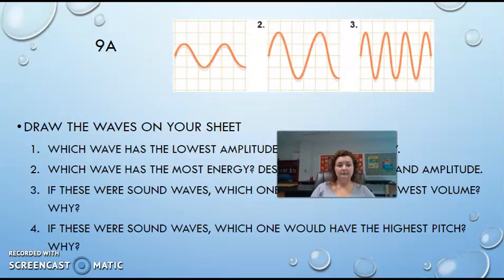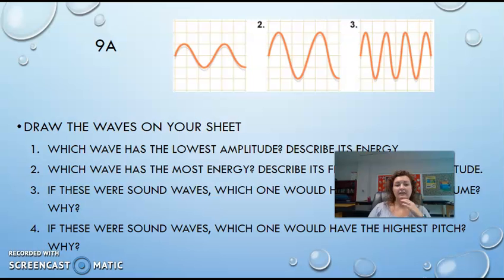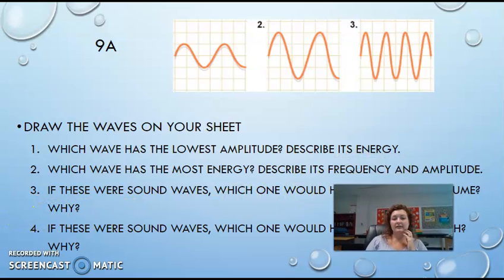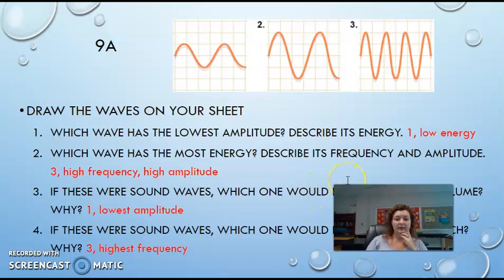Moving on. You had to look at these, draw these on your sheet. Describe which has the lowest amplitude and describe it. The lowest amplitude is going to be number one and it has the lowest energy. Number two, which has the most energy? Describe its frequency and amplitude. It's going to be number three. It has the highest frequency and the highest amplitude.